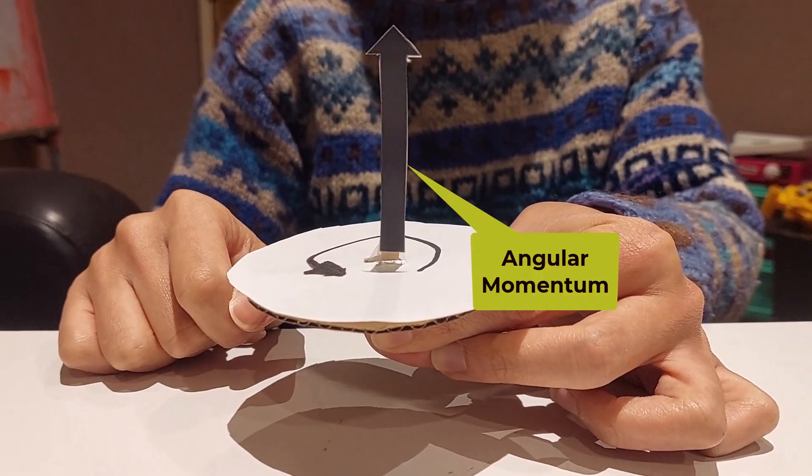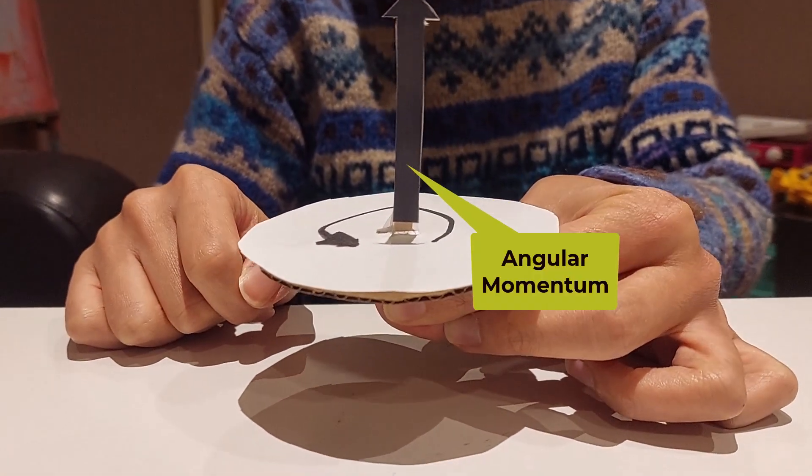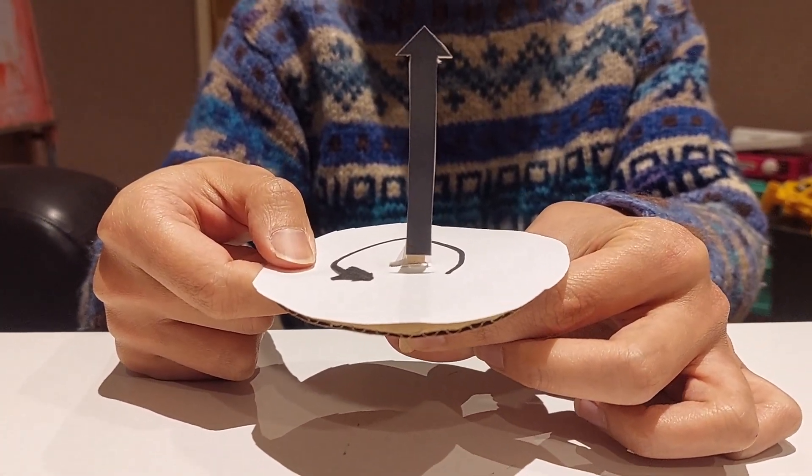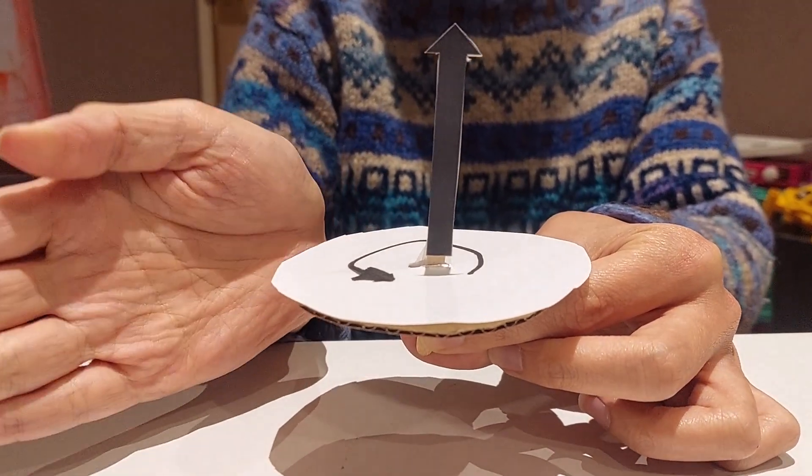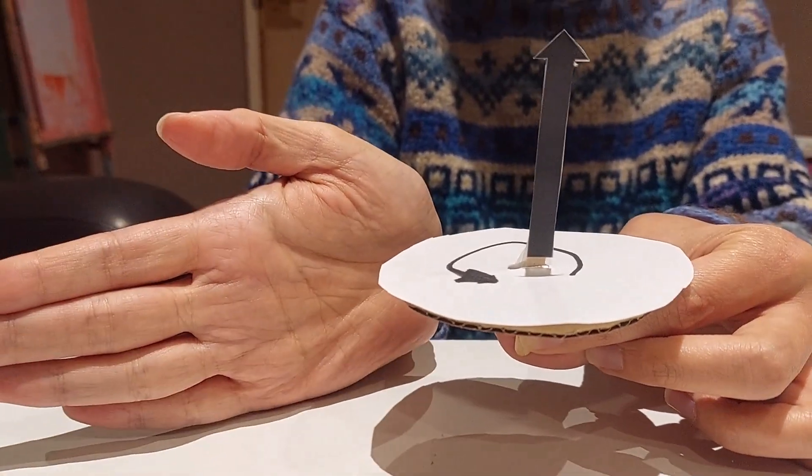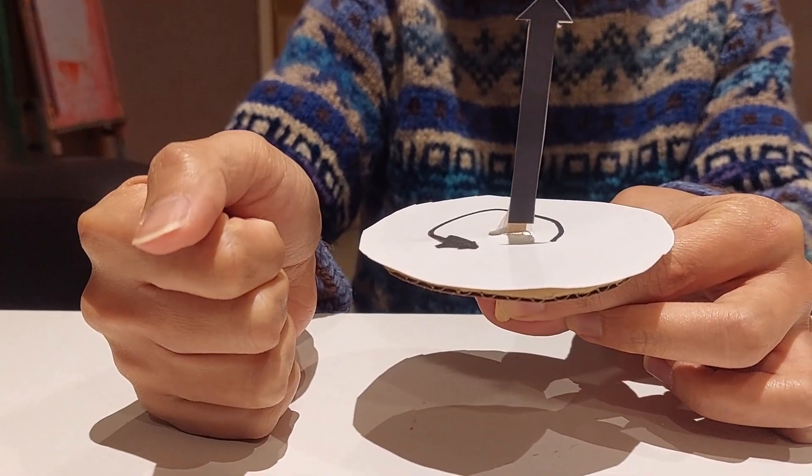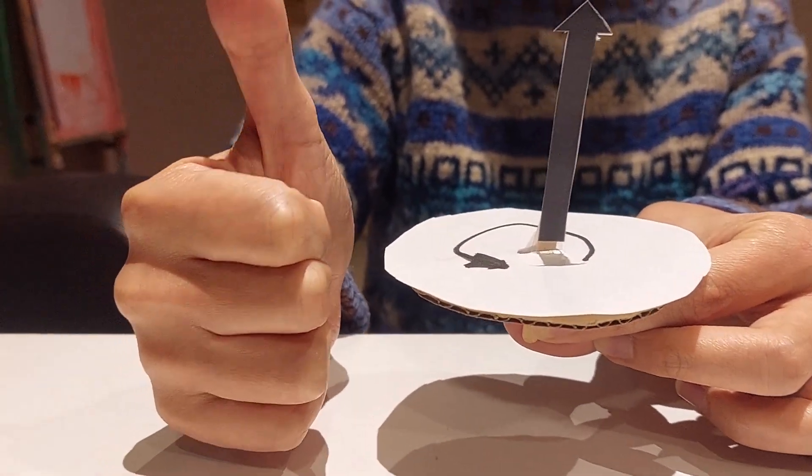How do we define the convention of which way the angular momentum is pointing? We take our right hand and curl our four fingers around the direction the object is rotating, and our thumb will be pointing towards the direction of the angular momentum.